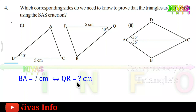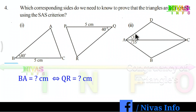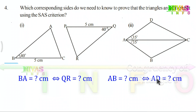So AB equal to n centimeters and QR equal to n centimeters — this is the required information. For the second one, AB is the common side. The angles are 35 degrees, which are equal. AB is the common side of both triangles. We confirm the second side: AD and AB — these two sides are equal. If AD equals AB, the triangles are congruent. Therefore AB equals n cm and AD equals n cm — that is our information.